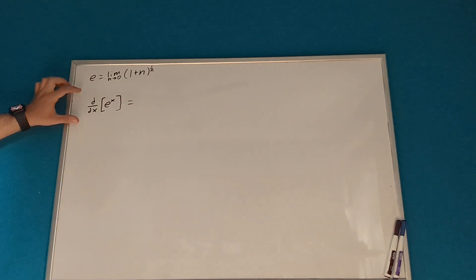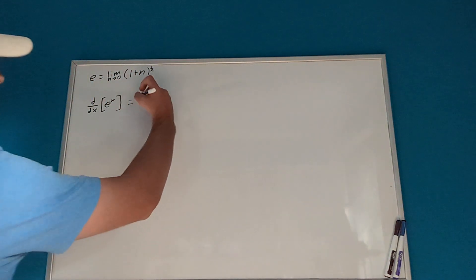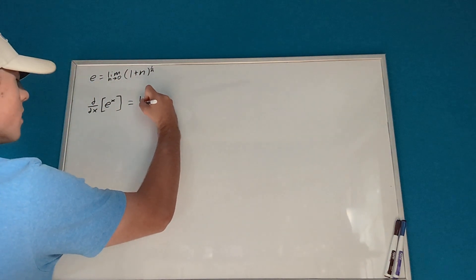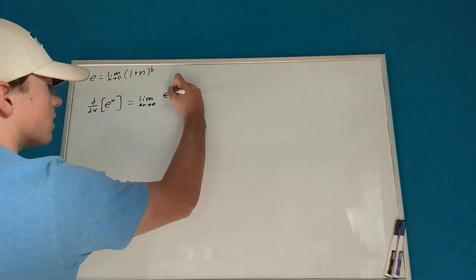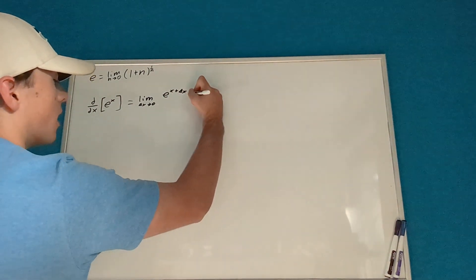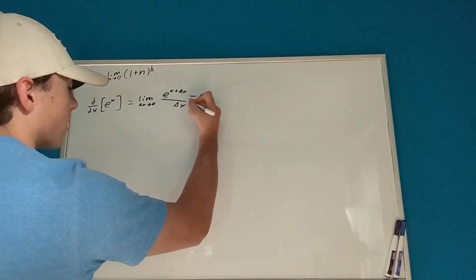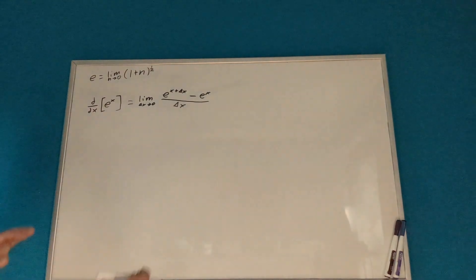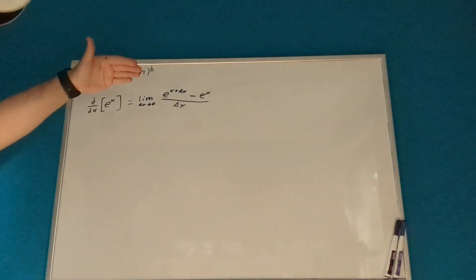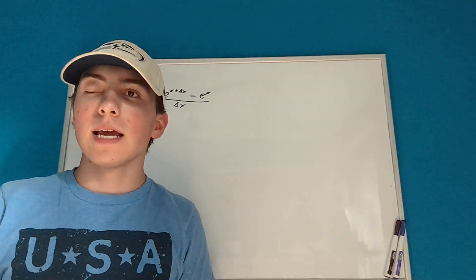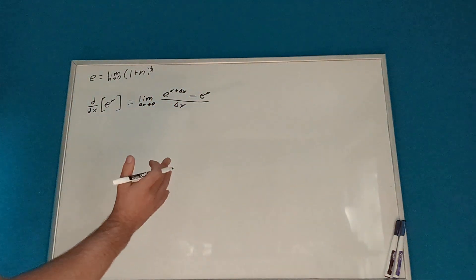If we have the derivative of e to the x, we can write this in terms of a limit. We can write this as the limit as delta x approaches 0 of e to the x plus delta x minus e to the x, over delta x. We can write it like this because we're finding the difference that the change makes, then dividing by that change to find the average rate of change — and that's what a derivative is.